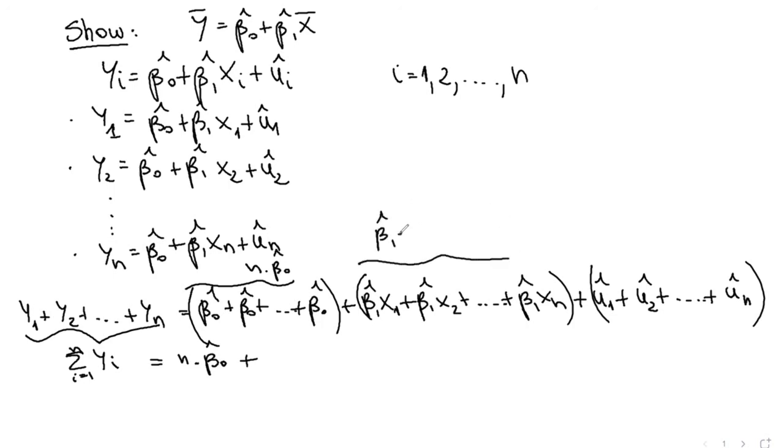So this is just beta 1 hat, which I can factor out, times the sum of all x's. So this is going to be beta 1 hat times the sum of all x's.